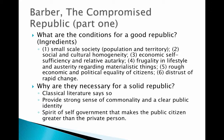Those six ingredients include: small-scale society — a small population and small territory; social and cultural homogeneity — people that act alike, think alike, and believe mostly the same things; economic self-sufficiency and relative autarky — meaning you don't have to rely on other countries; frugality in lifestyle and austerity regarding materialistic things — not spending on frivolous things or being ostentatious; rough economic and political equality of citizens; and distrust of rapid change. Barber says the U.S. has none of those.